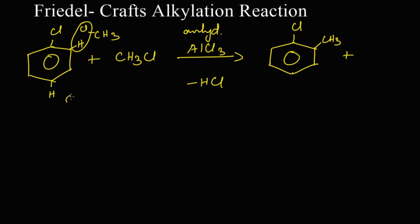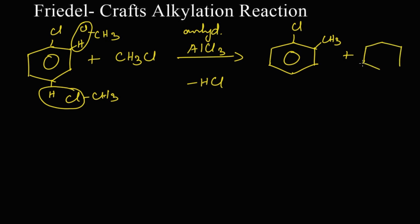In the same way, if the reaction takes place at the para position, the hydrogen from the para position of chlorobenzene and the chlorine from methyl chloride leave as HCl. The methyl group replaces the para hydrogen, so we get para-chlorotoluene, also called 1-chloro-4-methylbenzene.